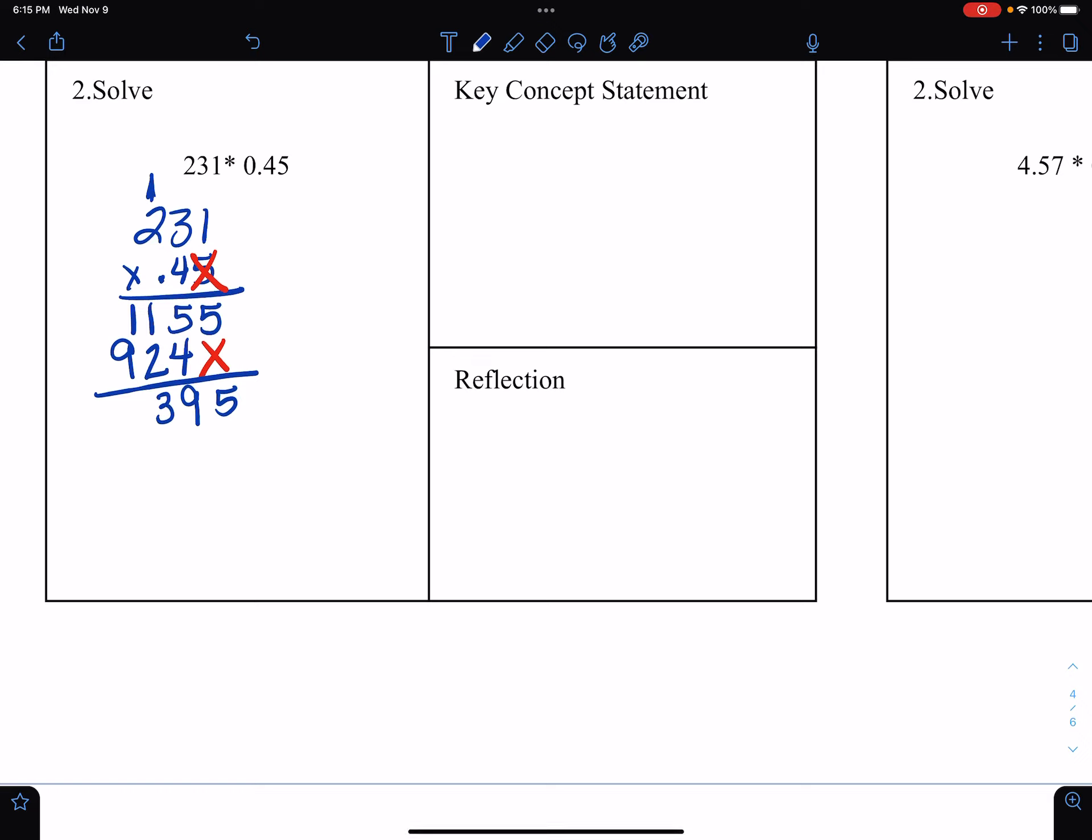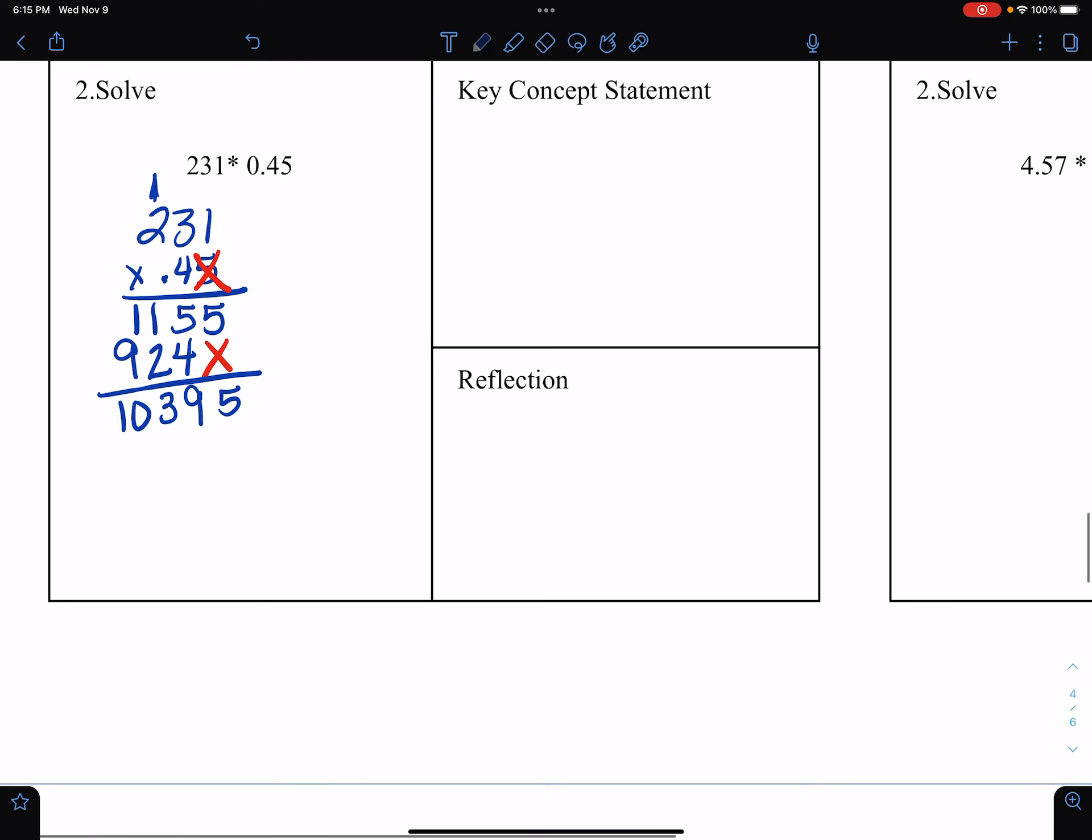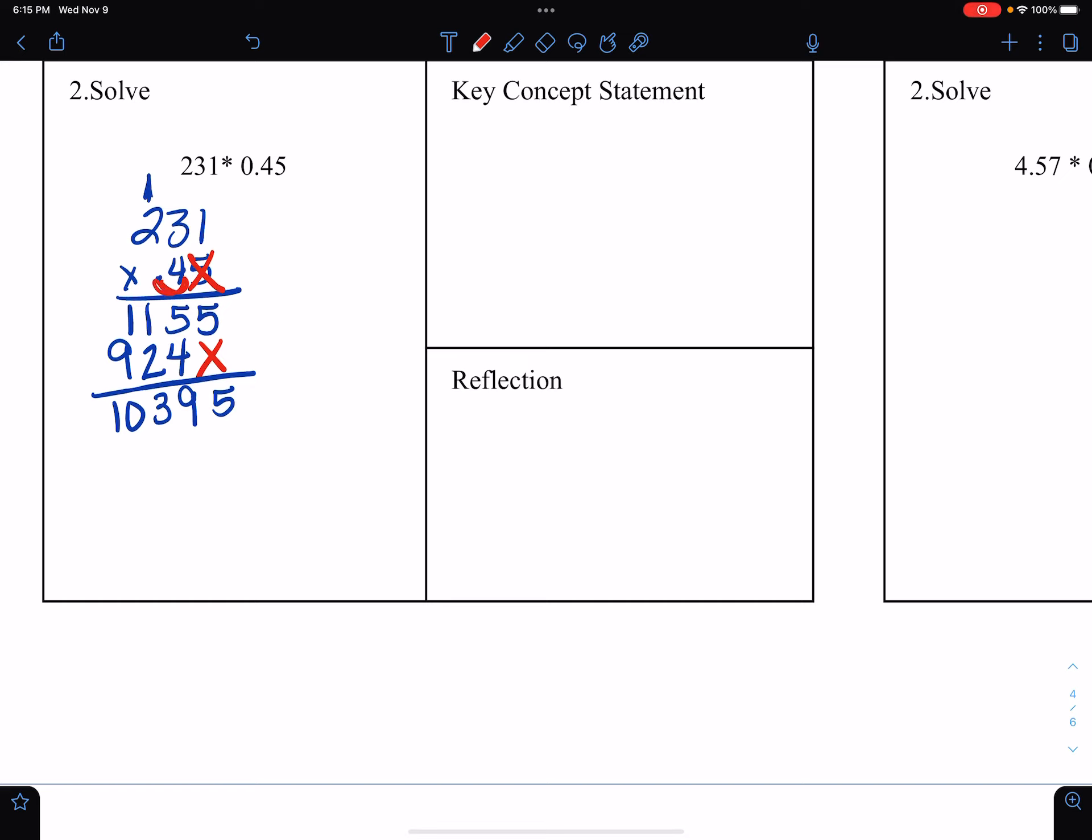My solution down there is 10395, but I am remembering that when I'm multiplying decimals I have to count how many decimal places there are at the beginning. So you'll notice there are two, so I'm going to count two down here. My final answer is 103.95.